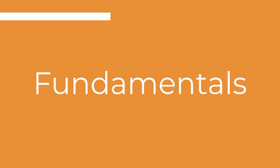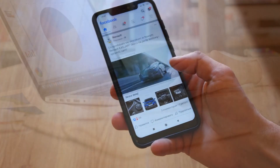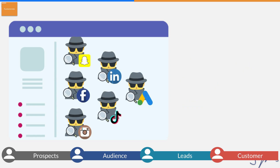Now to understand Tag Manager and what tags actually need to be managed in the first place, we need to understand triggers and most importantly tags and pixels. When it comes to digital advertising or just understanding website analytics, all of the different platforms out there — whether we're talking about Facebook, LinkedIn, or Pinterest, or Google's products like Google Ads or Google Analytics — they all have codes that they want you to put on your website.